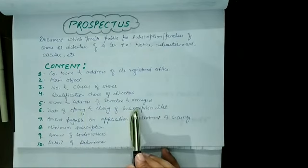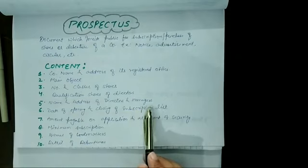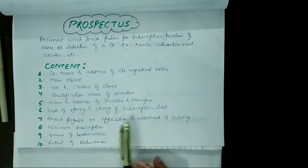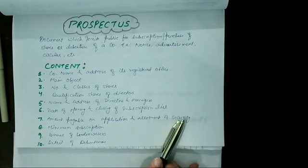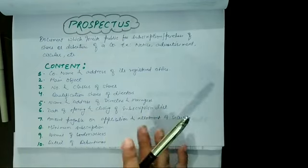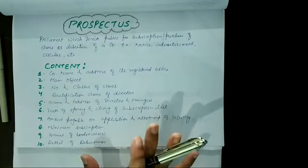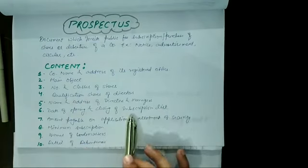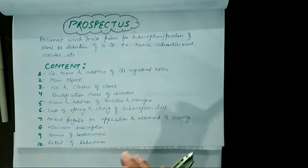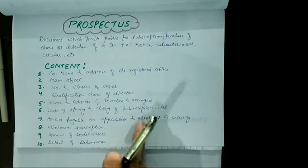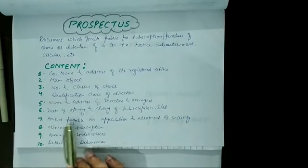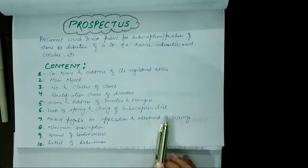Means कि किस date से shares को purchase कर सकते हैं और क्या last date होगी? The next one is Amount Payable on Application and Allotment of Security. जो shares का amount होता है, जैसे कि suppose माल लीजिए कि आपके एक share की कीमत 10 रुपए है, तो company 10 रुपए एक साथ नहीं मांगती, उसको different parts में divide कर देती है, जैसे कि Application, Allotment, 1st call, 2nd call — this topic you will be studying in your class 12th. So, prospectus contains the Amount Payable on Application and Allotment of Security.